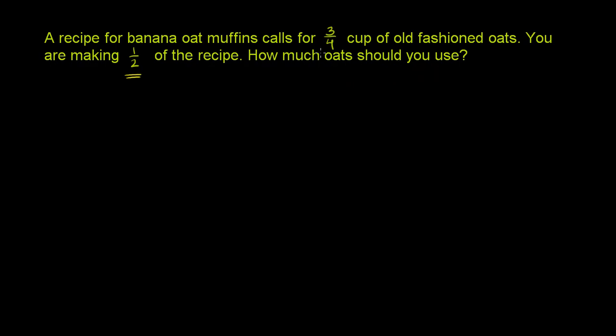So if the whole recipe requires three-fourths of a cup, and you're making half of the recipe, you want half of three-fourths, right? You want half of the number of old fashioned oats as the whole recipe. So you want one half of three-fourths. So you just multiply one half times three-fourths.